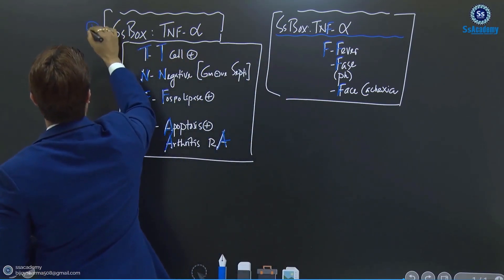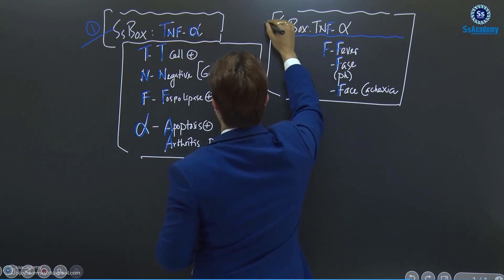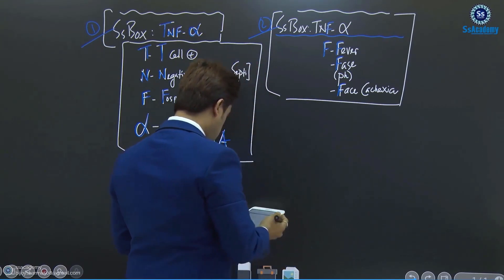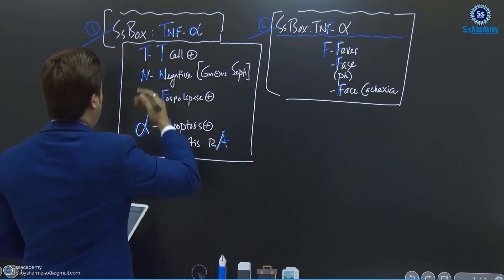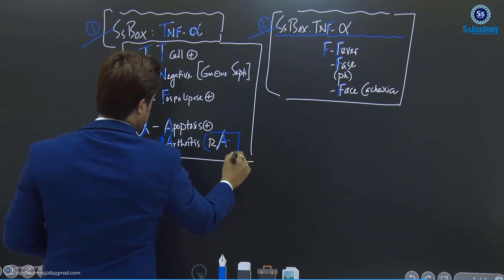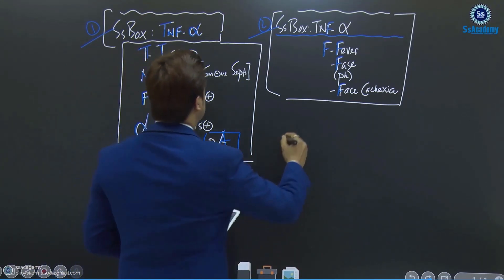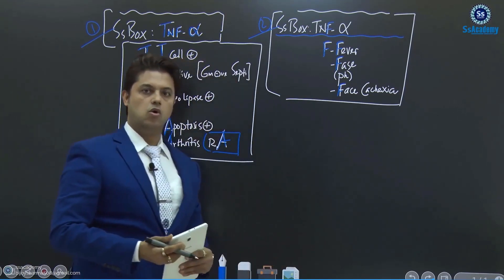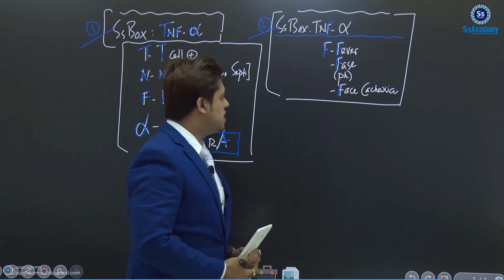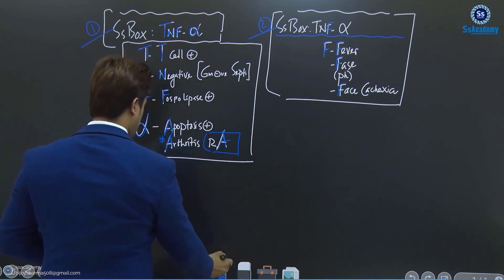So box one is TNF-alpha with T, N, F mnemonic, and box two covers systemic effects. The TNF-alpha blockers to know are infliximab, adalimumab, and etanercept. These two important boxes will help you remember all the key facts for the exam.